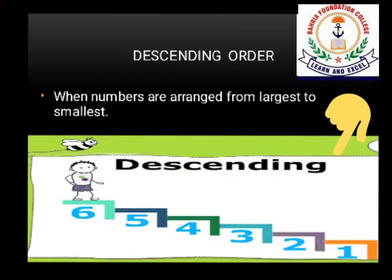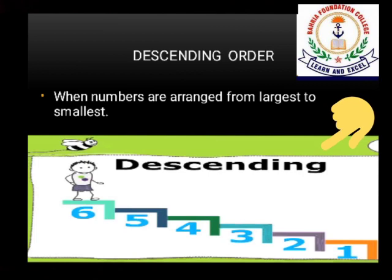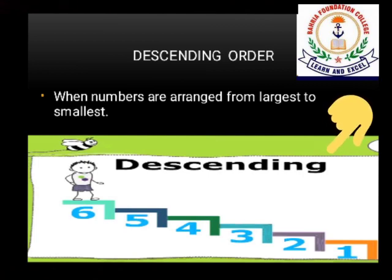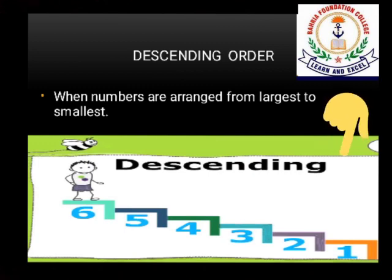Next is descending order. Students, in descending order, we arrange numbers from largest to the smallest. Class, descending order is opposite of ascending order.